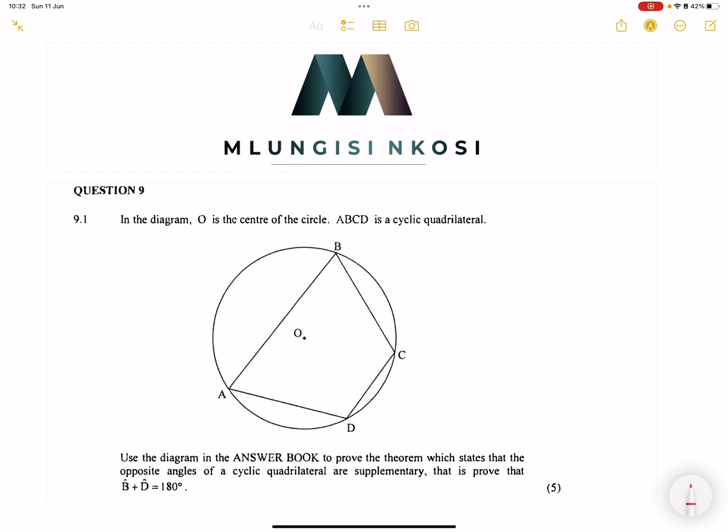We're going to be looking at question nine, which is on Euclidean geometry. And they say in the diagram we've got O, which is the center of the circle. A, B, C, D is a cyclic quad.